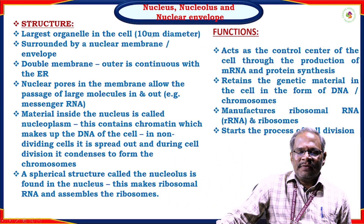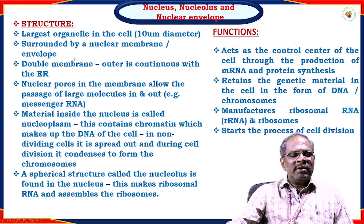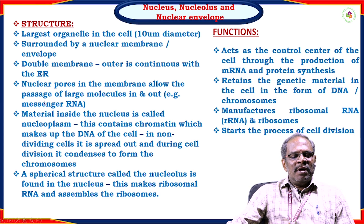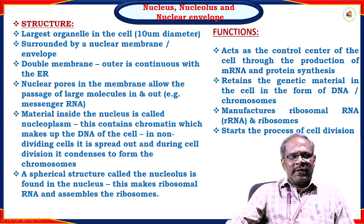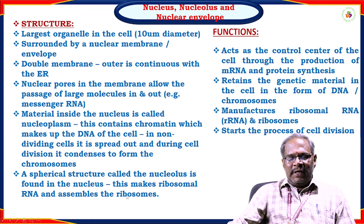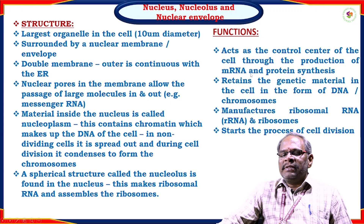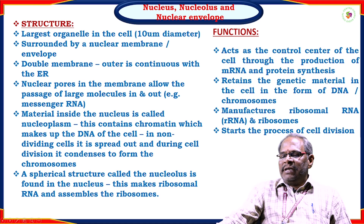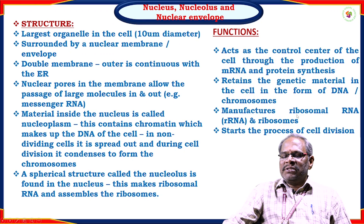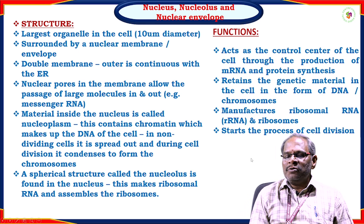The nucleus, nucleolus, and nuclear envelope: the nucleus is a large organelle approximately 10 micrometers in diameter, surrounded by a nuclear membrane. It has a double membrane, with the outer membrane continuous with the endoplasmic reticulum. Nuclear pores allow large molecules such as messenger RNA to pass in and out. The material inside the nucleus is called the nucleoplasm, which contains chromatin making up the DNA of the cell. A spherical structure called the nucleolus is found inside and assembles ribosomes. The major functions of the nucleus include acting as the control center of the cell through mRNA production and protein synthesis, retaining genetic material as DNA or chromosomes, manufacturing rRNA and ribosomes, and initiating cell division.